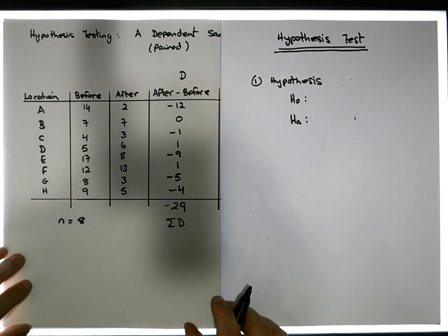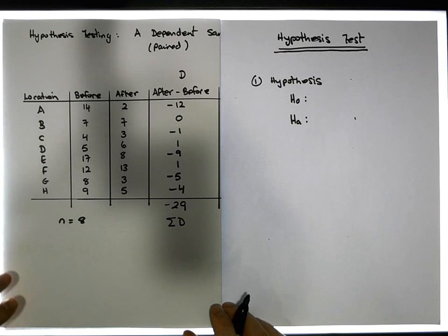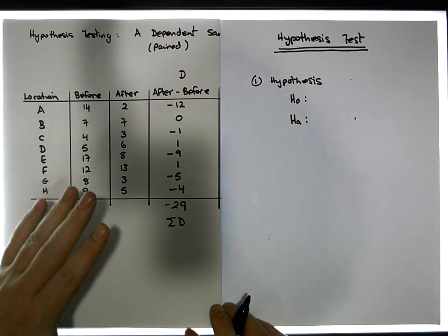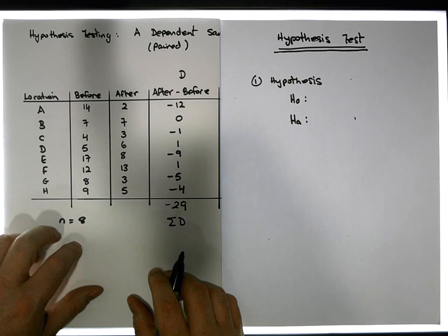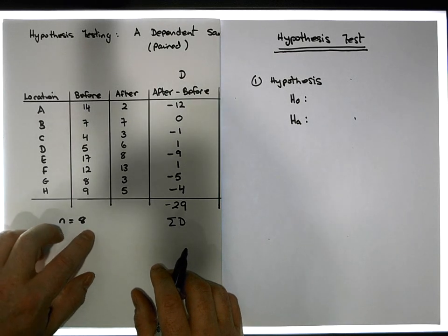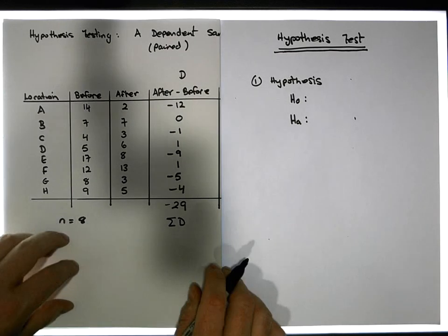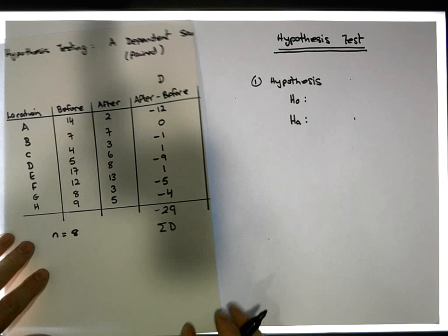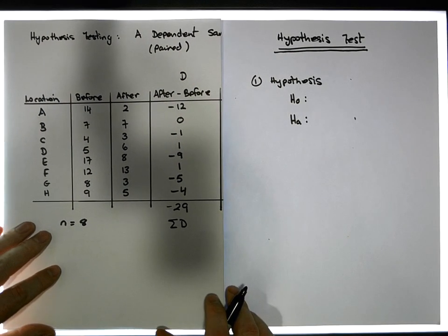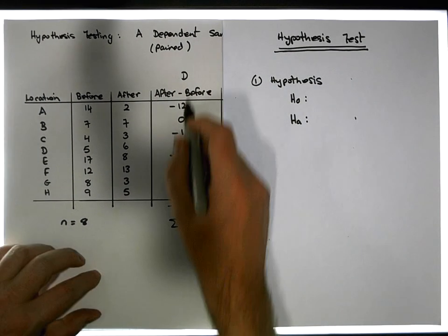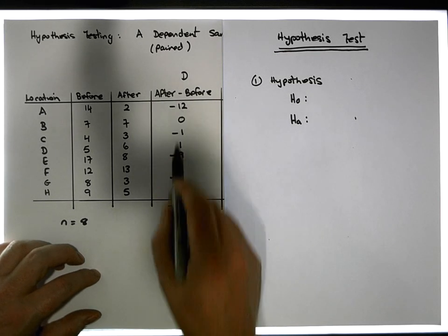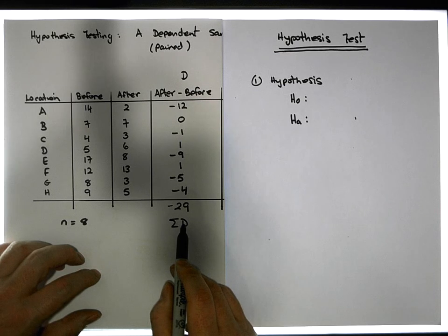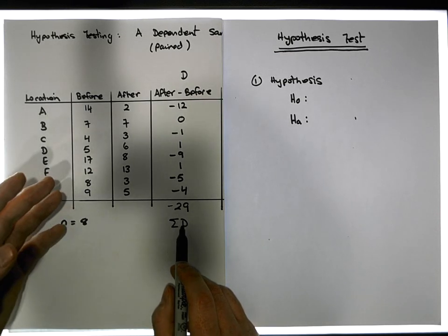In this case, this is a single-sided, single-tail test. I want to ascertain whether there's evidence to suggest that the average difference has reduced. If the average difference is negative, that would be evidence to suggest there was a reduction.